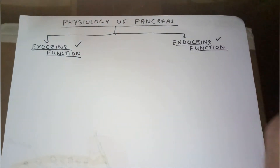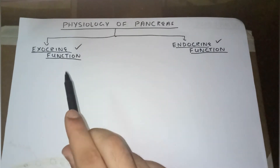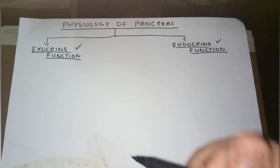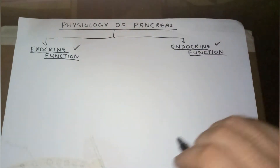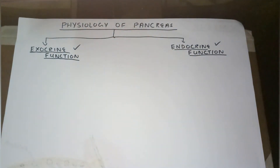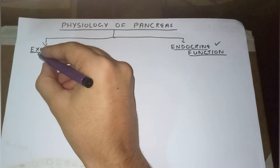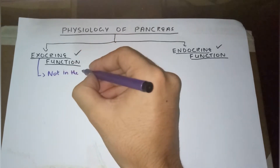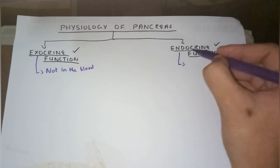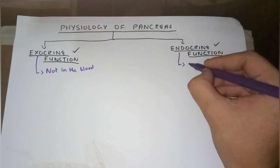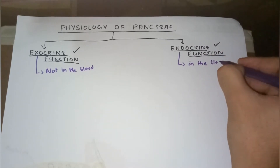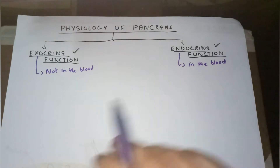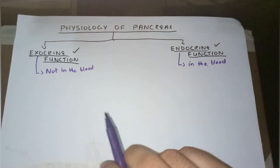Before knowing about the exocrine and endocrine functions, we must know what exocrine and endocrine glands are. Exocrine glands secrete their secretion not into the blood — it may be into the GIT or somewhere else. Endocrine glands secrete their secretion directly into the blood, into the circulation. This is the main difference between endocrine and exocrine glands.